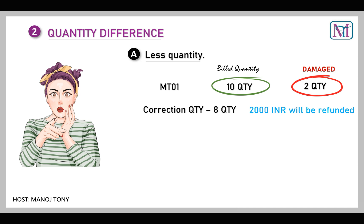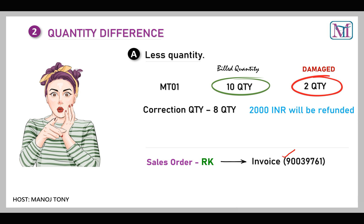Since 2 quantities are totally damaged, we will not return the goods from the customer location to the plant. So there is no physical movement of goods. The sales order type is RK, and we have already created our sales document as YRK. We will create the invoice correction request with reference to the previous invoice.